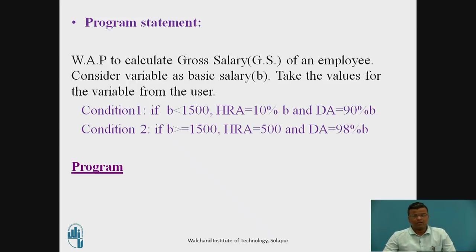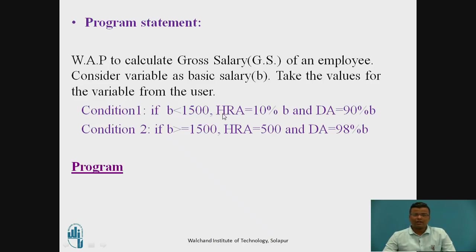Today we will discuss the program regarding how to take the value from the user. The program statement is: write a program to calculate the gross salary of an employee. Consider the variable as basic salary, where we have to take the value from the user. If the basic salary is less than 1500, the house rent allowance will be 10% of the basic salary and the dearness allowance will be 90% of the basic salary. If basic salary is greater than or equal to 1500, then the house rent allowance is 500 and the dearness allowance will be 98% of the basic salary.